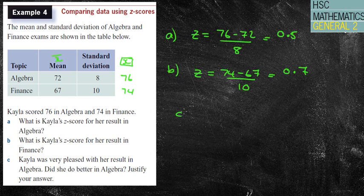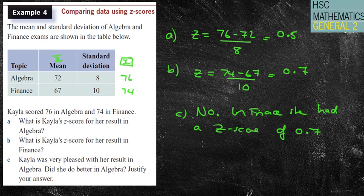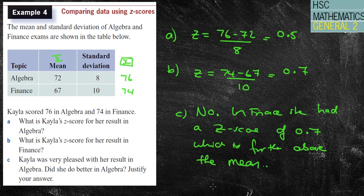C says, Kayla was very pleased with the result in algebra. Did she do better in algebra? Justify your answer. No, she did not. In finance, she had a z-score of 0.7, which is further above the mean.